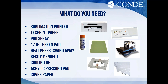Sprite, talk to us about what we need. You obviously have to have a sublimation printer. You have to use the text print paper — I tried originally to use just the regular SPP paper and it was a mess, it stuck. You have to use Pro Spray because the only thing that can touch the face, the shiny side, is the pressing pad. You also need a cooling jig and a 1/16th inch green pad. And, of course, you need a press — preferably the swing away. Quite a few things, but it pays off in the end.